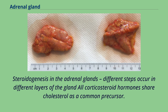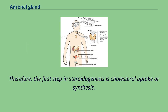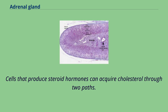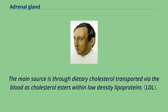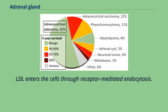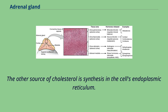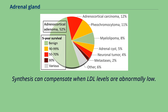Steroidogenesis in the adrenal glands involves different steps in different layers of the gland. All corticosteroid hormones share cholesterol as a common precursor; therefore, the first step in steroidogenesis is cholesterol uptake or synthesis. Cells that produce steroid hormones can acquire cholesterol through two paths. The main source is dietary cholesterol transported via the blood as cholesterol esters within low-density lipoproteins. LDL enters the cells through receptor-mediated endocytosis. The other source of cholesterol is synthesis in the cell's endoplasmic reticulum, which can compensate when LDL levels are abnormally low.